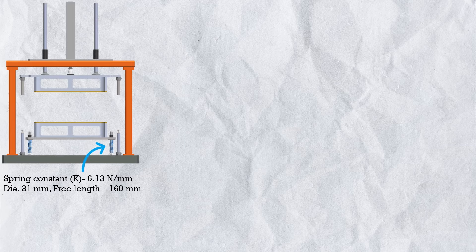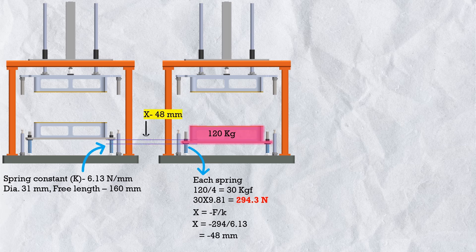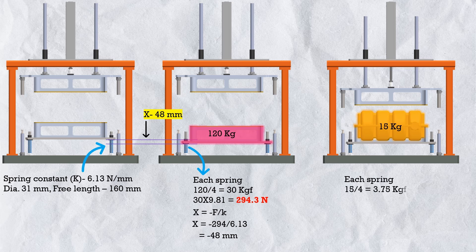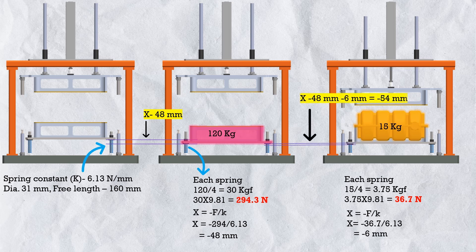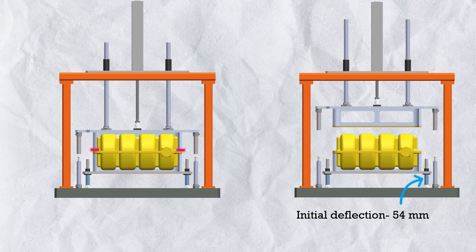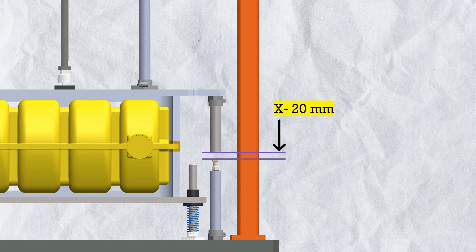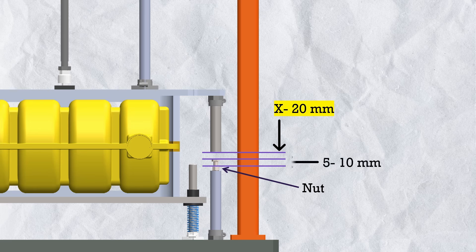So we will put this spring at the bottom of the fixture. First, the spring gets pressed by the bottom fixture weight: 120 kg ÷ 4 = 30 kg = 294.3 N per spring, deflecting it by 48 mm at spring constant 6.13 N/mm. When we load the component — 15 kg, i.e., 3.75 kg = 36.7 N per spring — it adds 6 mm deflection, bringing total to 54 mm. Then we bring down the top jig to just touch the component, set the stopper bolt at 20 mm gap, and add a nut leaving a 5 to 10 mm room to increase pressing load if needed.